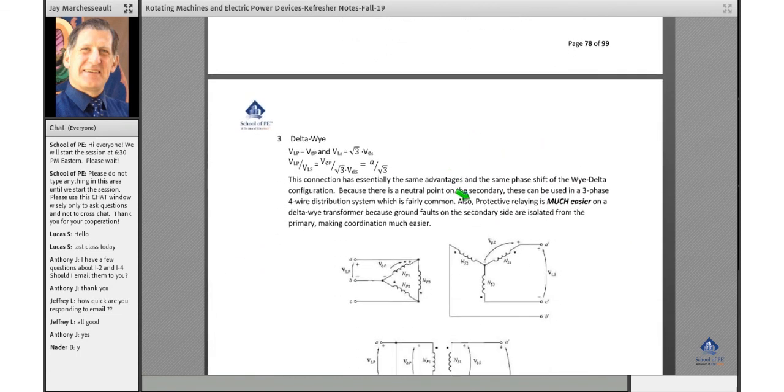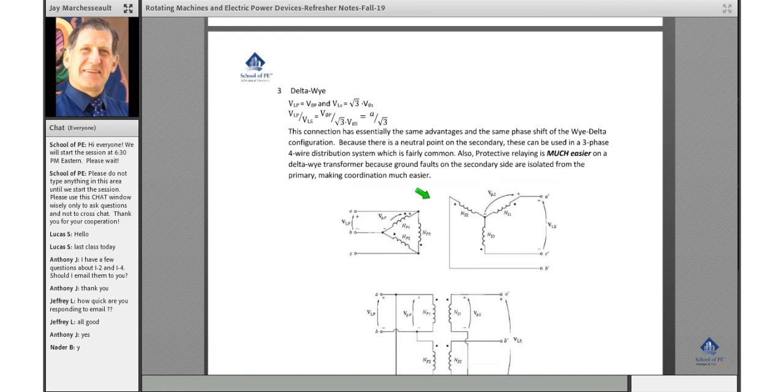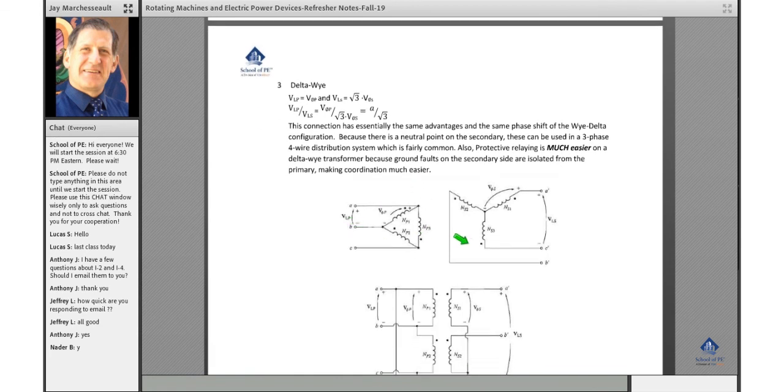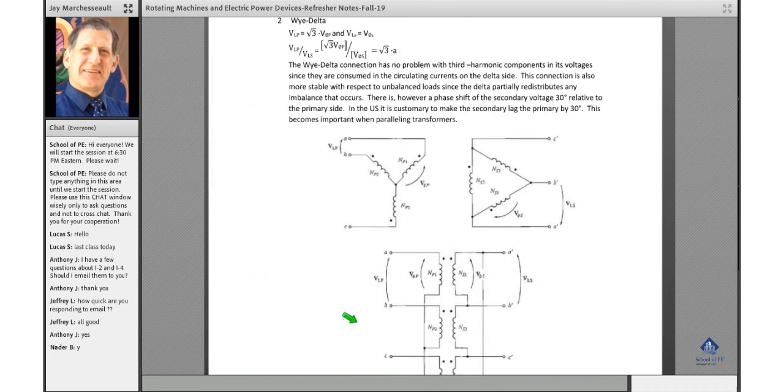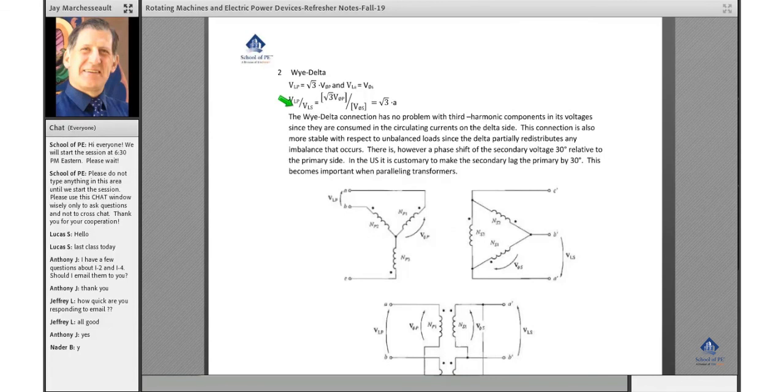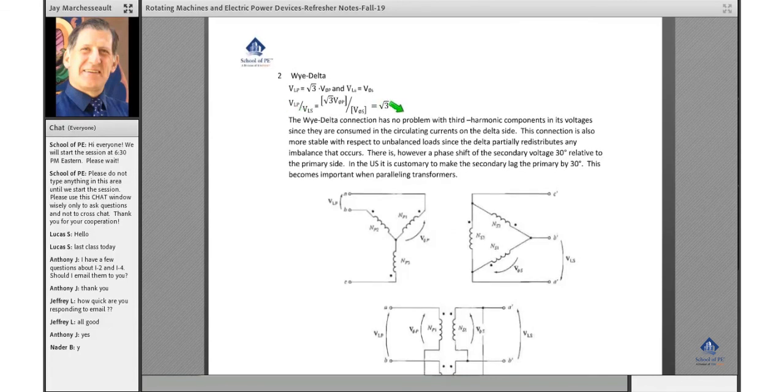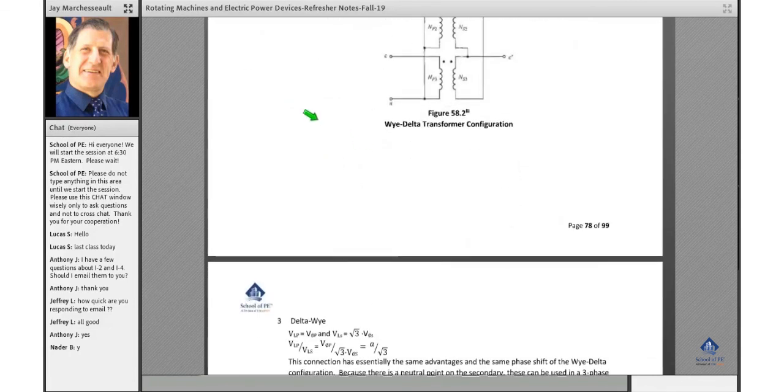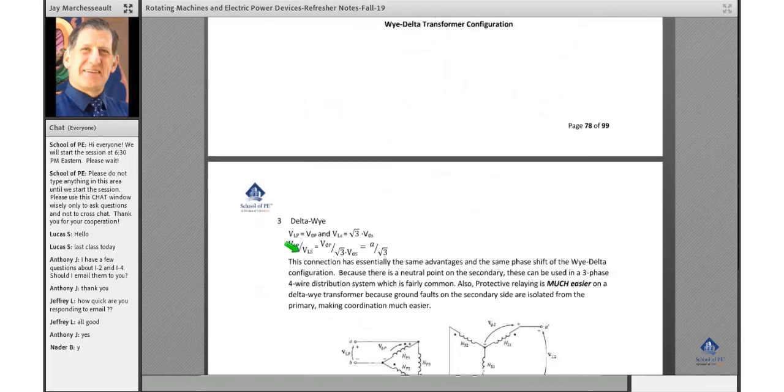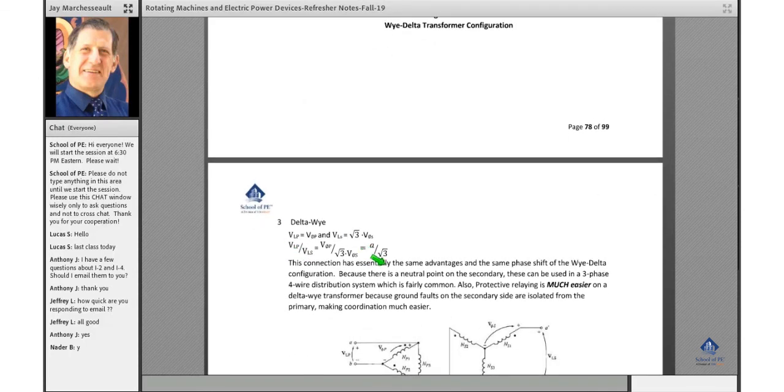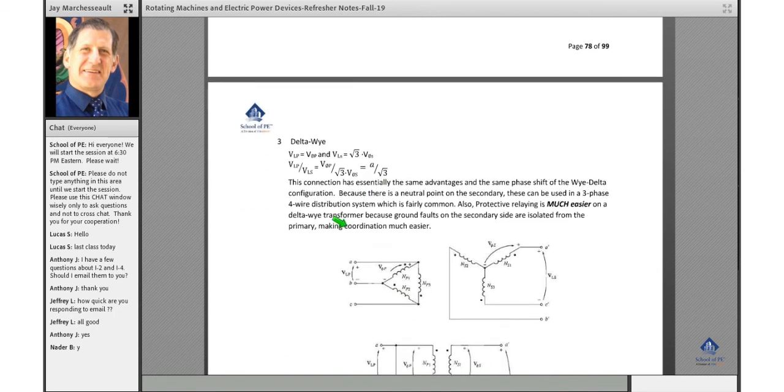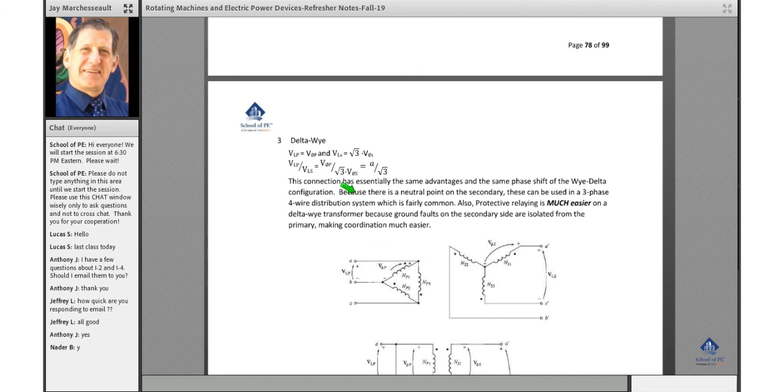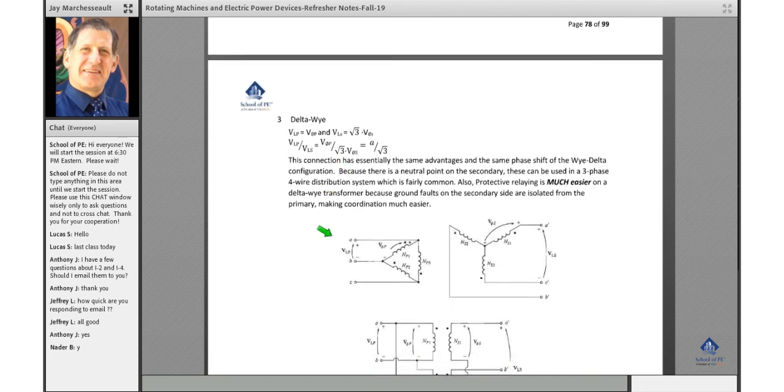OK? That's Y delta. Then you can have delta Y. Similar concept, but now the delta is on the primary, the Y is on the secondary. So you remember before, up here we had V line primary, V line secondary is equal to root 3 times A. Now we're going to have V line primary over V line secondary is equal to A over the root of 3. So the root 3 is in a different spot now.